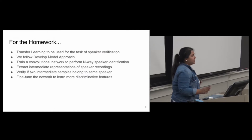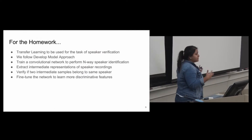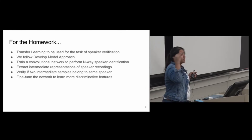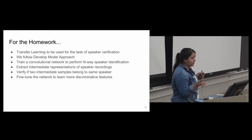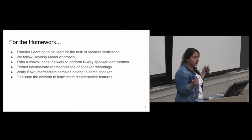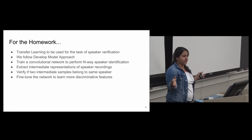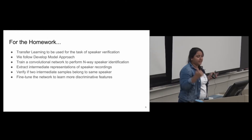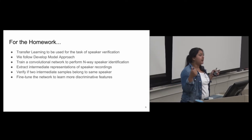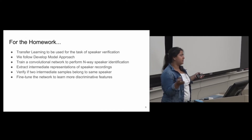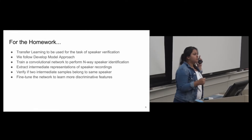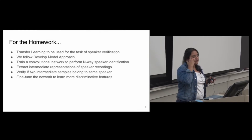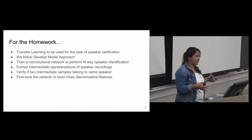For this homework, we're going to use transfer learning for the task of speaker verification, following the developed model approach. We first train a model for task one — training a convolutional network to perform N-way speaker identification using the speaker IDs in our dataset — and then fine-tune it for task two. After training the classification task, we extract the intermediate representations of the speaker recordings, and then verify if two representations belong to the same speaker. But that's just not enough — we have to fine-tune the network to learn more discriminative features, because it's not only a class identification task, it's a verification task.